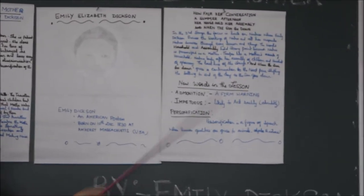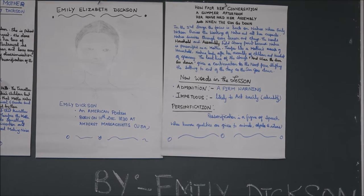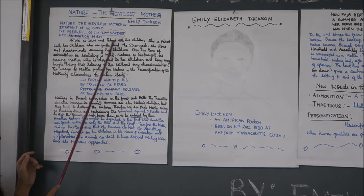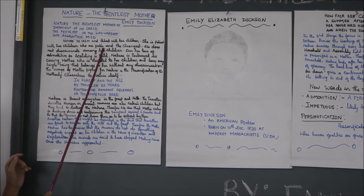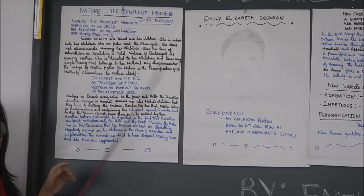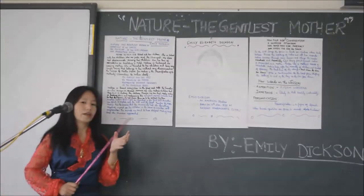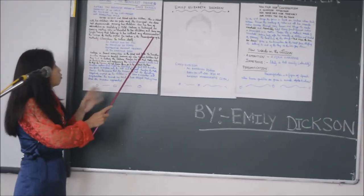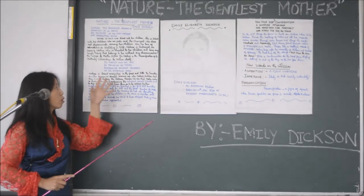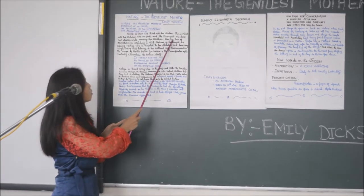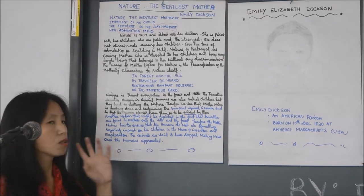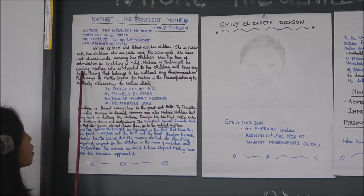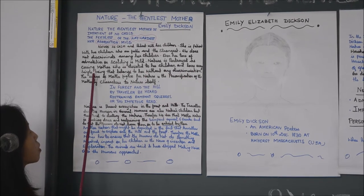The first stanza tells us that nature is calm and patient with her children — whether they are feeble, meaning the weakest, or the waywardest, meaning the most stubborn. She does not discriminate among her children. Even her tone of admonition, or scolding, is mild — in a soft way.